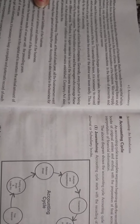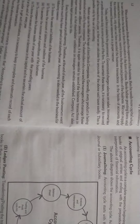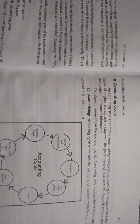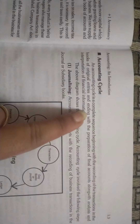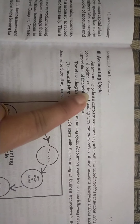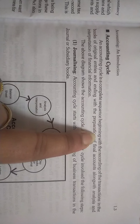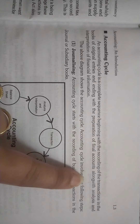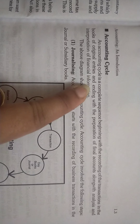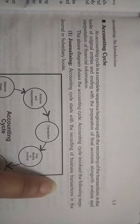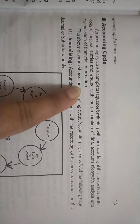We are Plus One commerce students. We started the first chapter and studied accounting meaning and definition. Next we will study the accounting cycle. The accounting cycle is a complete sequence beginning with the recording of transactions in the books of original entries and ending with the preparation of final accounts along with analysis and interpretation of financial information.